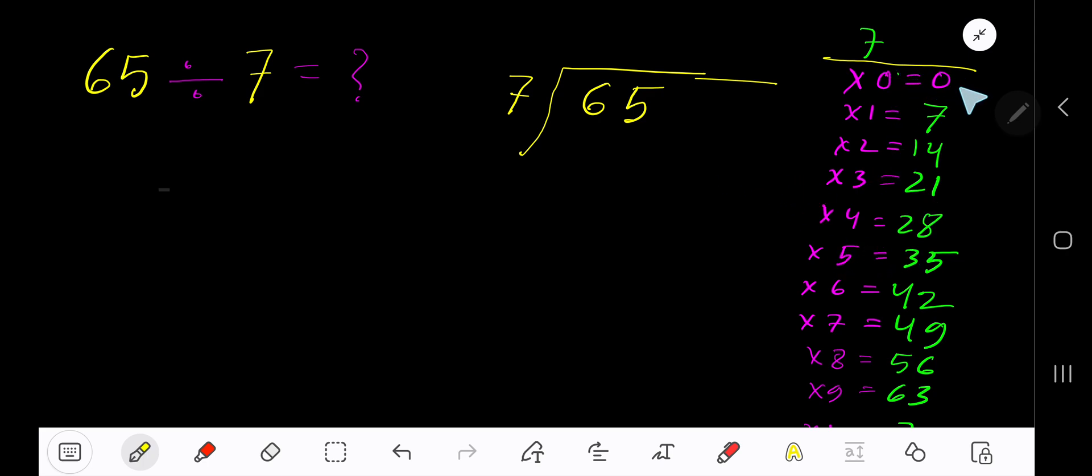To find out the multiplication table of 7 easily, just add 7 with the previous step: 0 plus 7 equals 7, 7 plus 7 equals 14, 14 plus 7 equals 21, 21 plus 7 equals 28. This process will continue. 7 goes into 6 how many times?